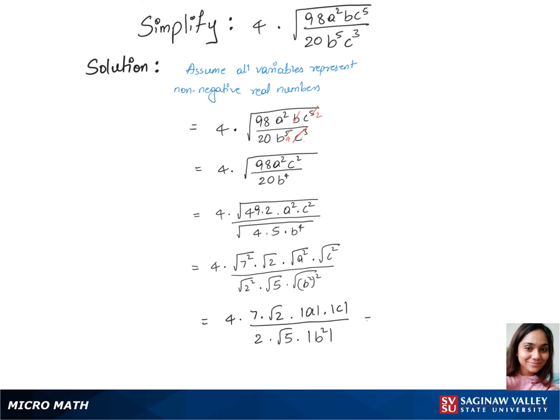Equals, we are now left with 14√2 times ac over √5 b². That's our final answer.